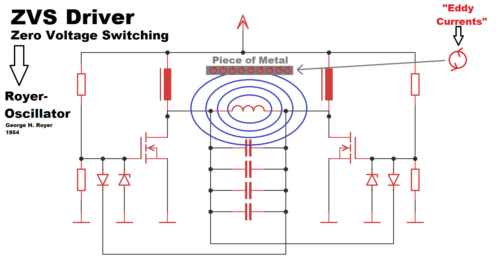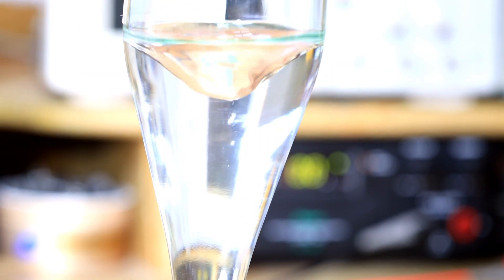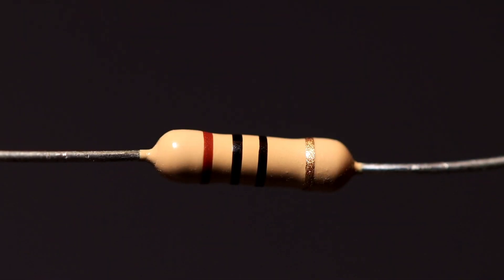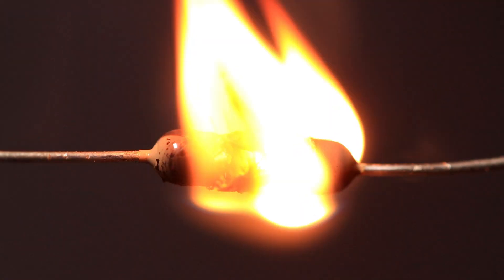Currents are induced in the object by the magnetic field which is emitted from the coil. These are so-called eddy currents. But why eddy currents? Because these currents flow in eddies. Heat is generated by the resistance of the metal opposing the currents. If a too-high current flows through a resistor it will get warm.